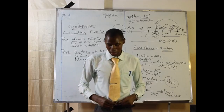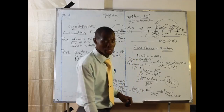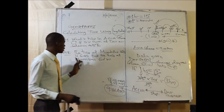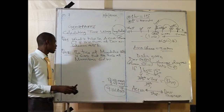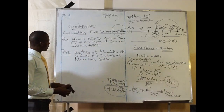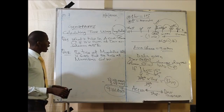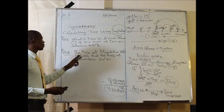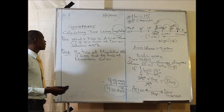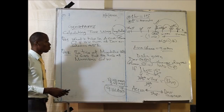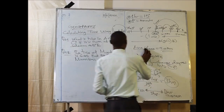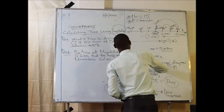Question number two: The time at Mogadishu, which is 30 degrees east, is 6:45 AM. Find the time at Mumbai, 60 degrees west. Mogadishu is 30 degrees east.